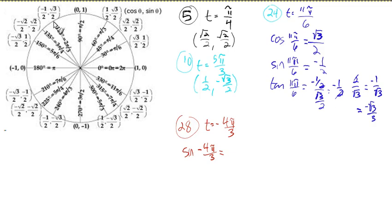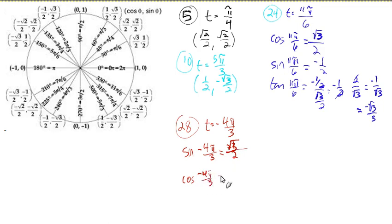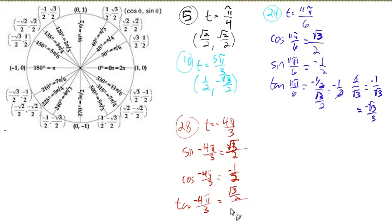Negative four pi over three is coterminal with two pi over three, and it'll have the same sine and cosine. The sine is root three over two. The cosine of negative four pi over three — that's the x value — is negative one-half. The tangent is sine over cosine: root three over two divided by negative one-half, which is root three over two times negative two over one. The twos cancel, leaving negative root three.